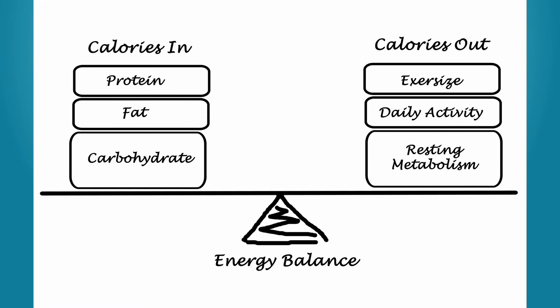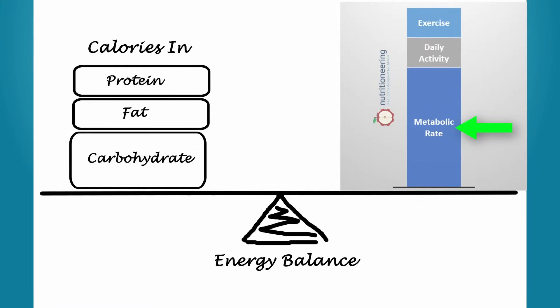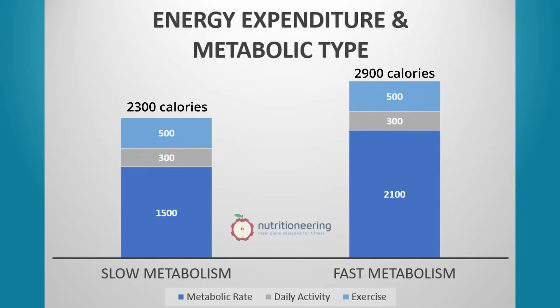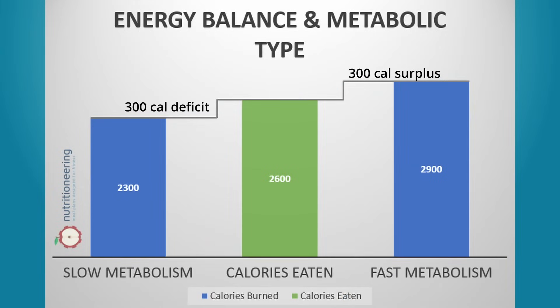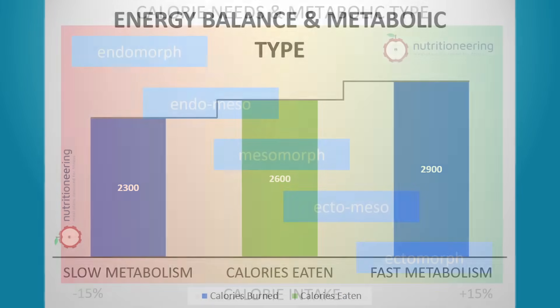Most people know about calories in versus calories out. But did you know that your metabolism burns 60 to 80% of your daily calories? So metabolic variation can account for a few hundred calories per day. This is why adjusting for your metabolic type is essential when determining your daily calorie intake for fat loss or muscle gain.